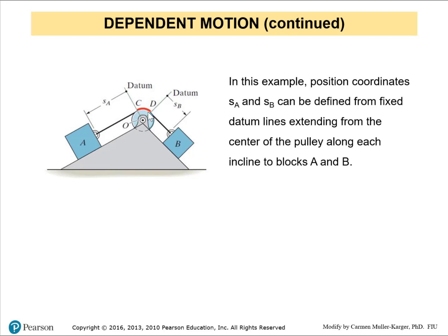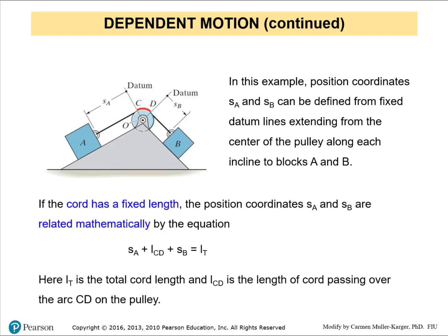The length of the cord will not change around the pulley — the red section is a fixed length. But the length SA changes when block A goes up, and SB changes when block B goes down. Since the cord is inextensible, it has a fixed total length. We establish the total cord length as SA plus a constant segment LSD plus SB, and that equals the total length of the cord.